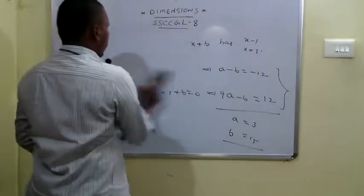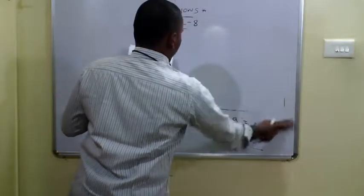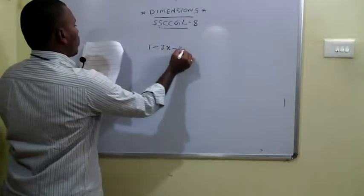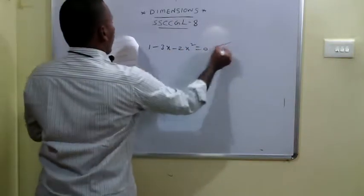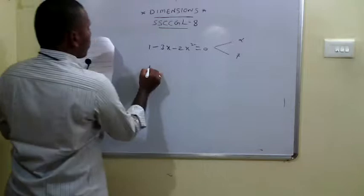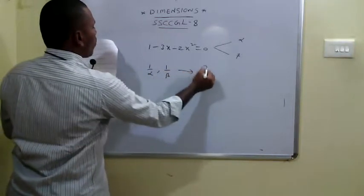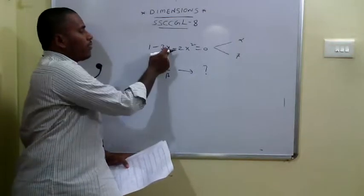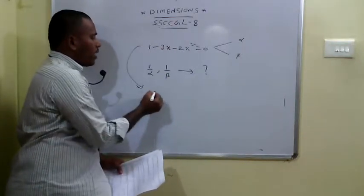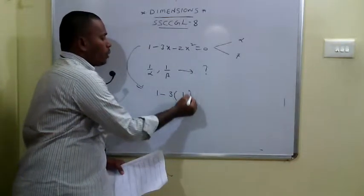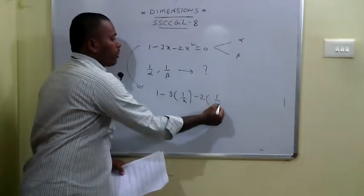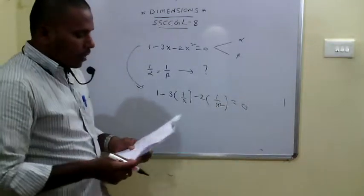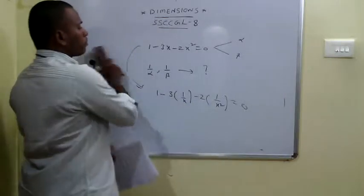The 61st problem is from quadratic equations. For the equation 1 minus 3x minus 2x squared equals 0 with roots alpha and beta, they ask us to find the equation whose roots are 1 by alpha and 1 by beta. We replace x with 1 by x in the original equation. Simplifying 1 minus 3 into 1 by x minus 2 into 1 by x squared equals 0 gives x squared minus 3x minus 2, which is option C.